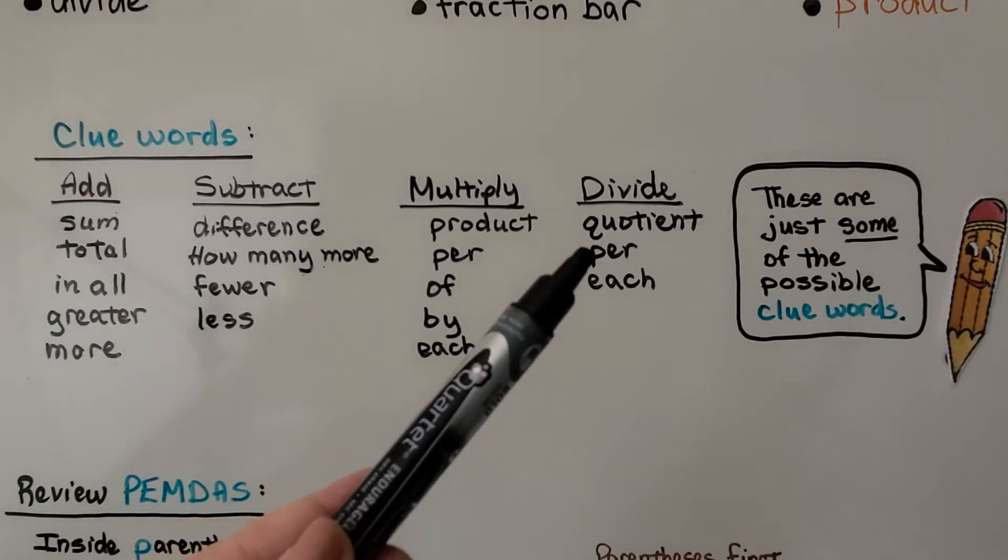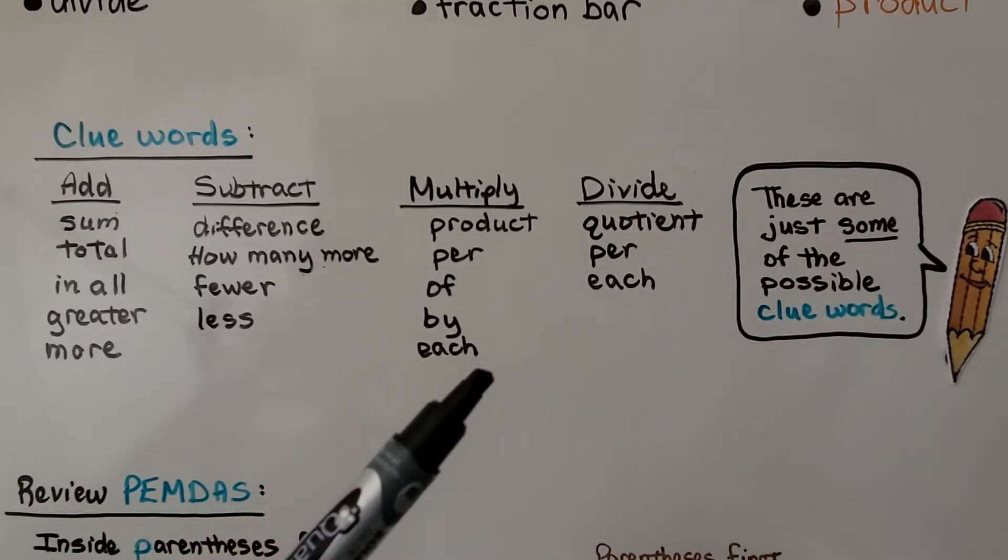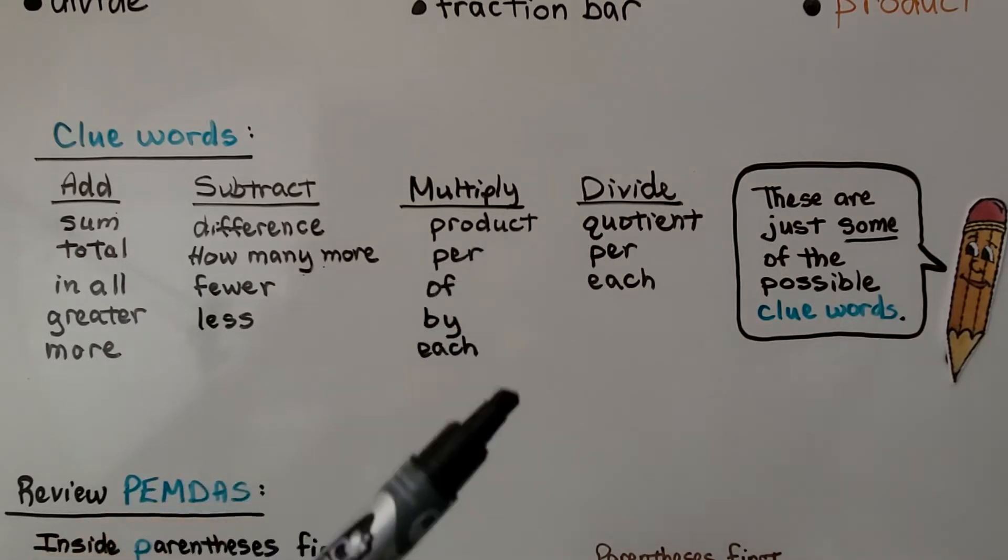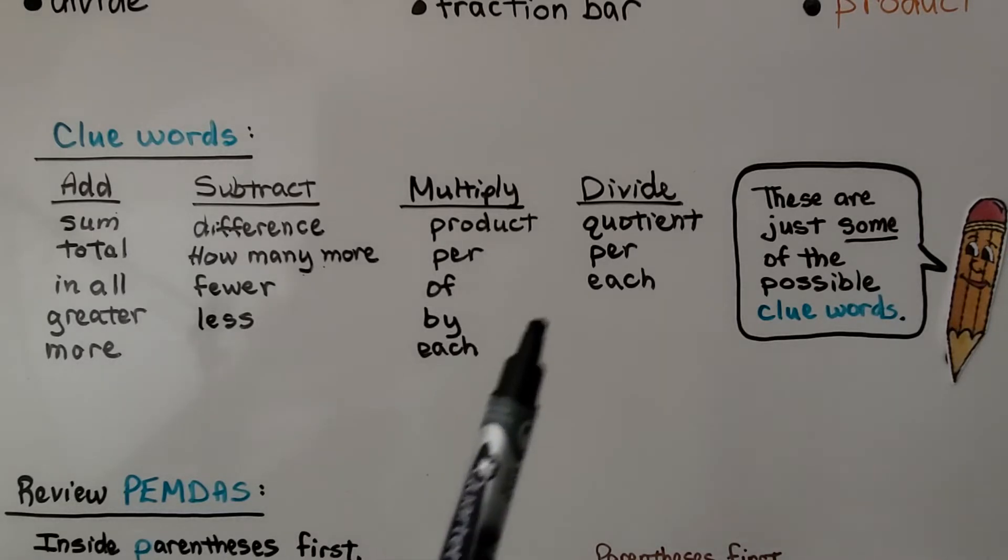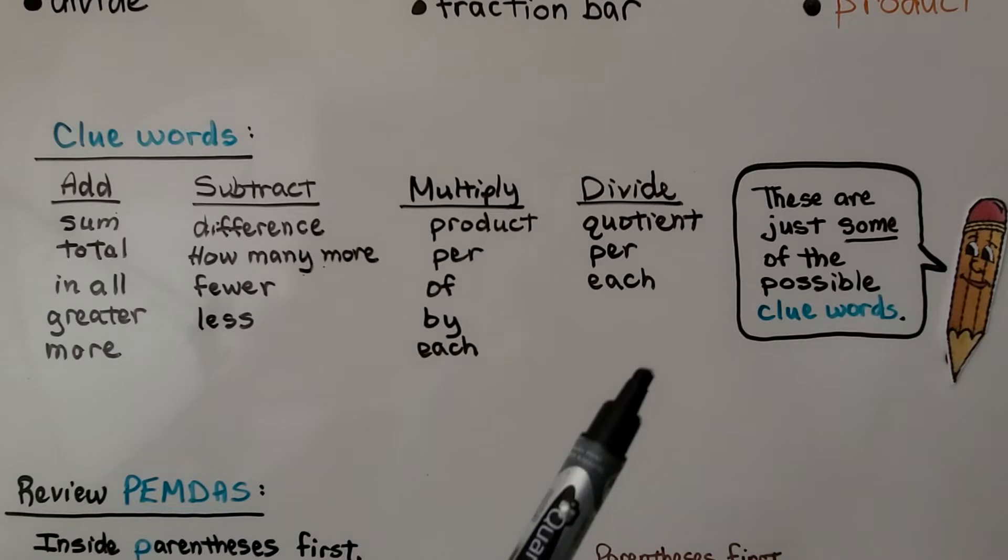And to divide, you might see quotient, per, and each. And notice that for multiplication and division, you might see per for either one or each for either one. It depends on the context of the word problem. It depends on how the words are put together in the word problem to decide whether you need to multiply or divide. And again, these are just some of the possible clue words.